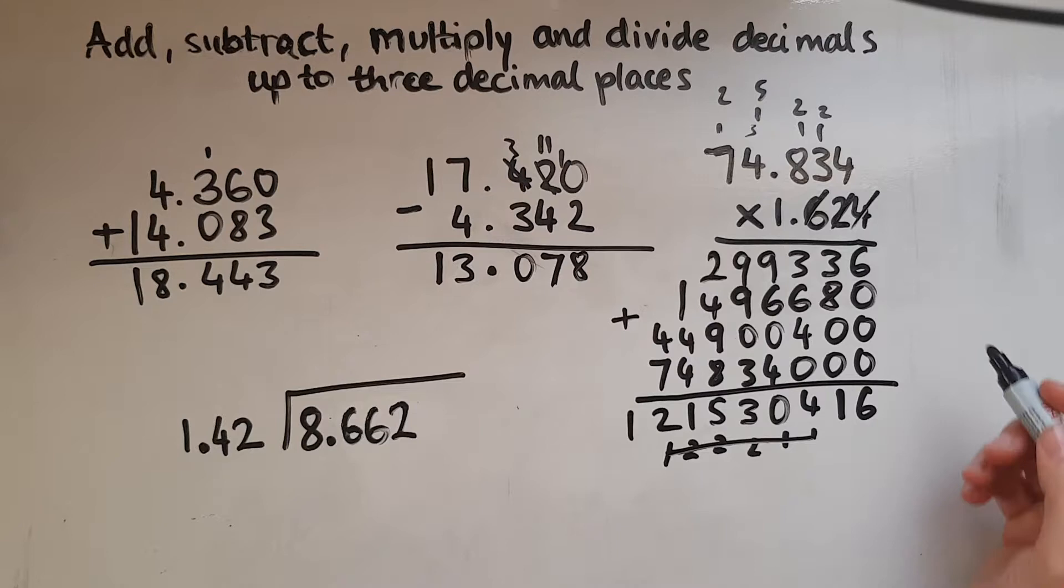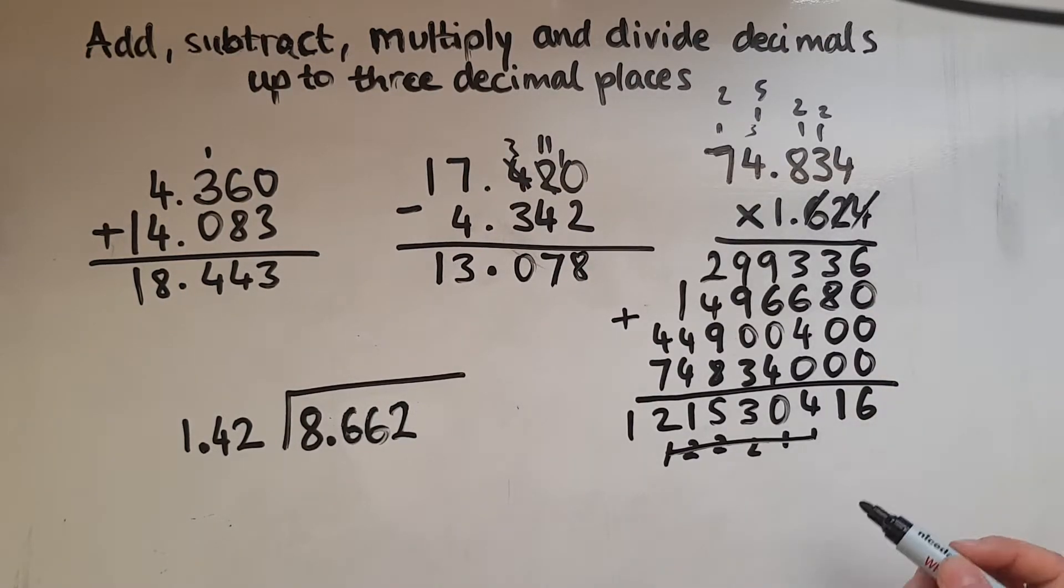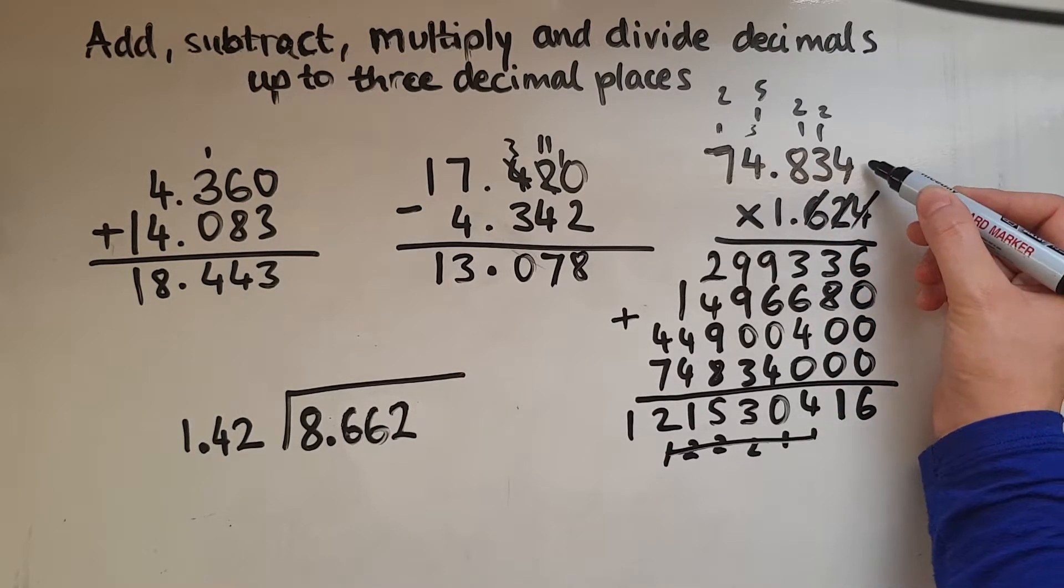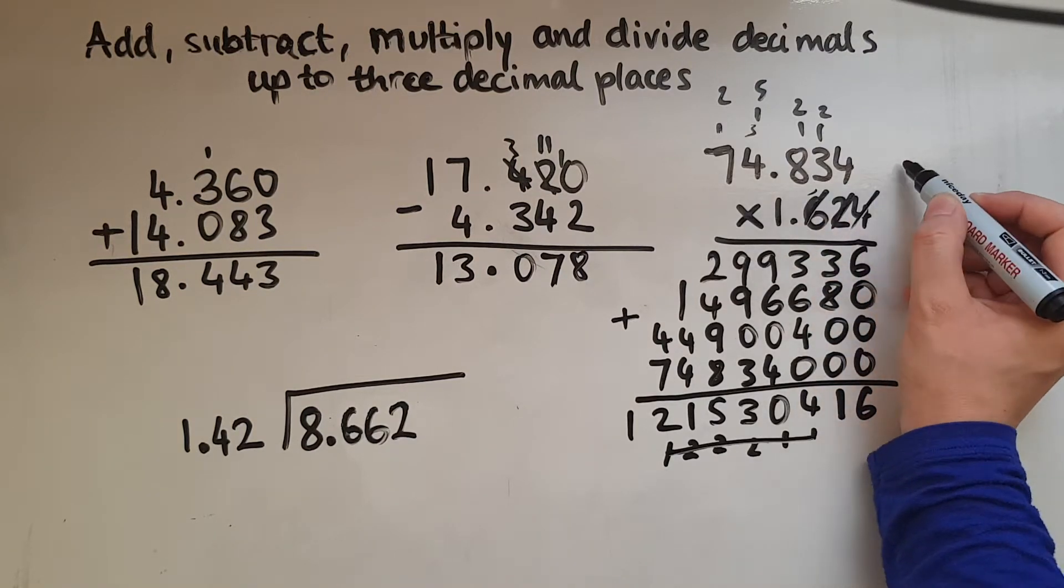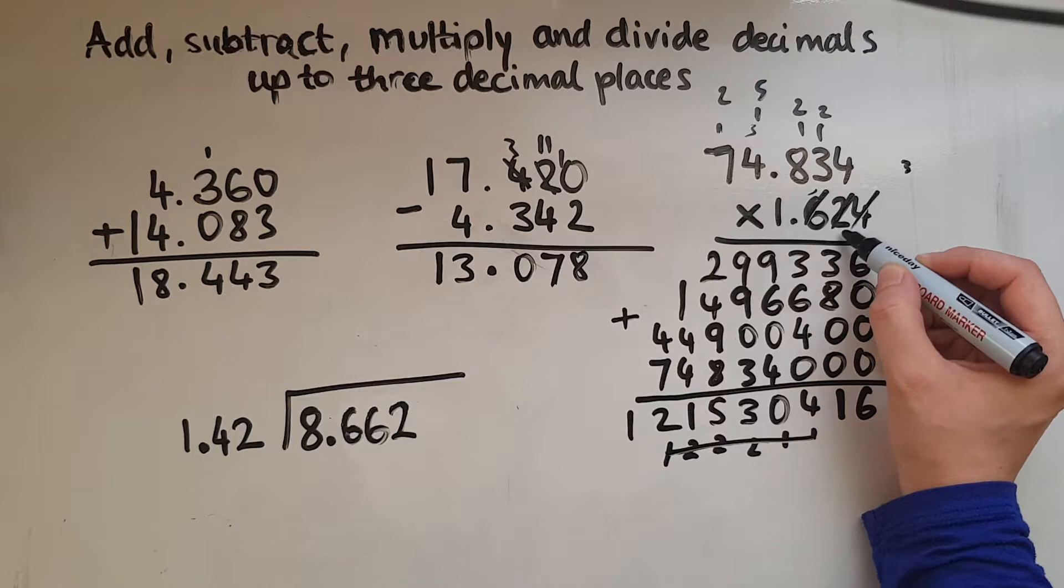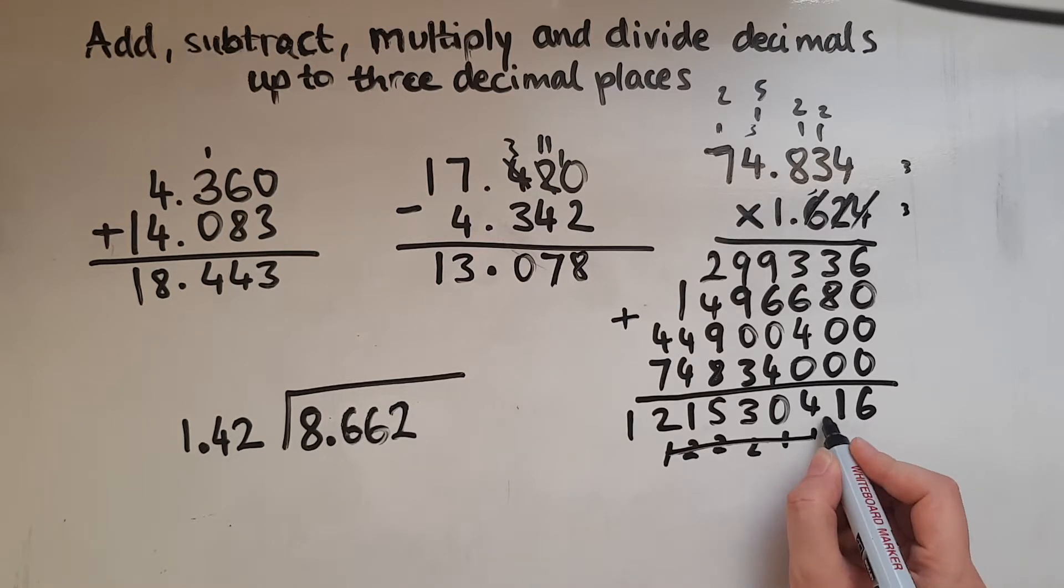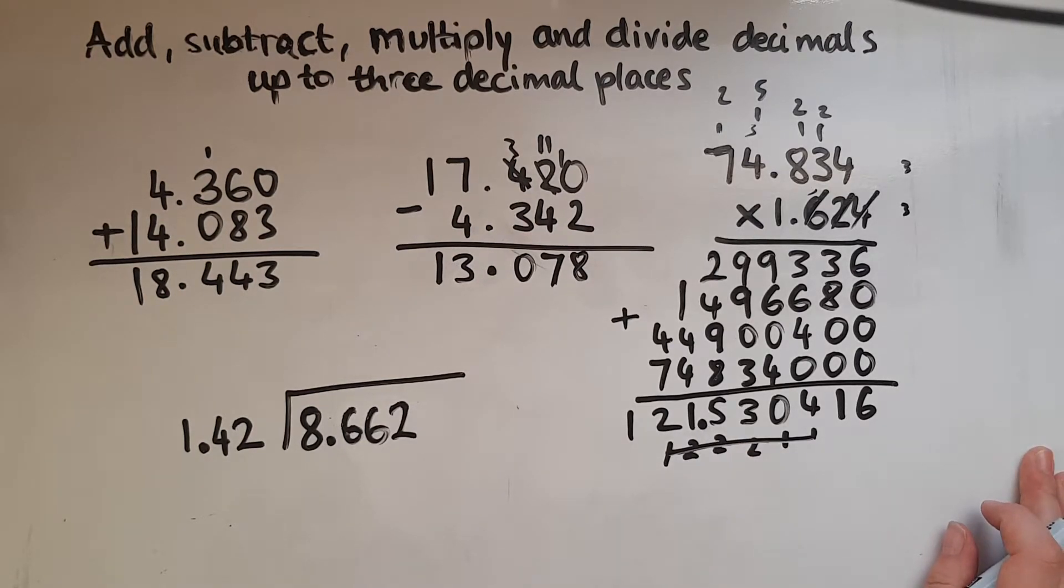And what we're going to do now is place the decimal point. Where does it go? Now the way we do this is we calculate how many decimal places there are in the first number, and there's 1, 2, 3. So that's the digits after the decimal point. So we've got 3 here, and we've got 1, 2, 3, 3 here as well. So 3 and 3 make 6. So I need to give this answer 6 decimal places. So I go 1, 2, 3, 4, 5, 6. So the decimal point needs to go here. So the answer is 121.530416.